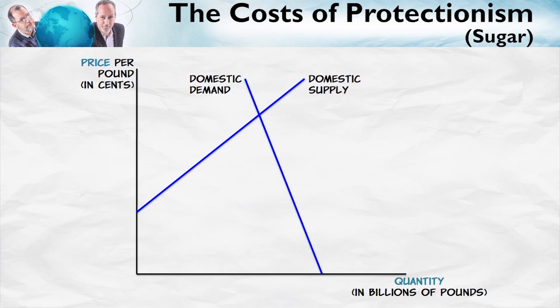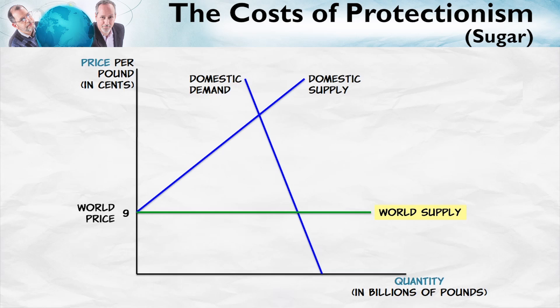In order to focus on the welfare costs, I'm going to make two simplifying assumptions. First, I'm going to assume that the world price is so low that if there were complete free trade, there would be no domestic supply whatsoever. Think about a good like sugar — if we had complete free trade in sugar, we in the United States would probably import all of our sugar.